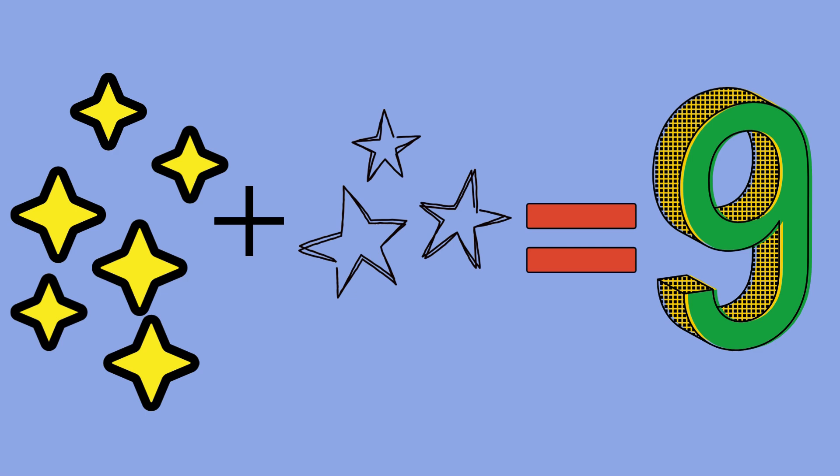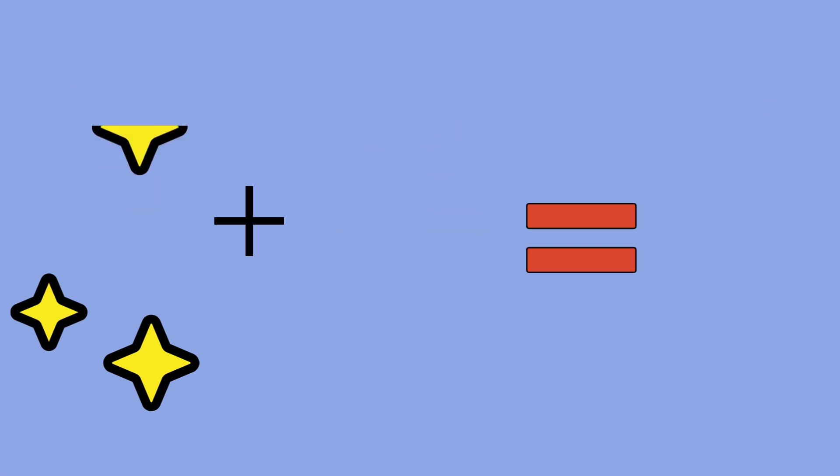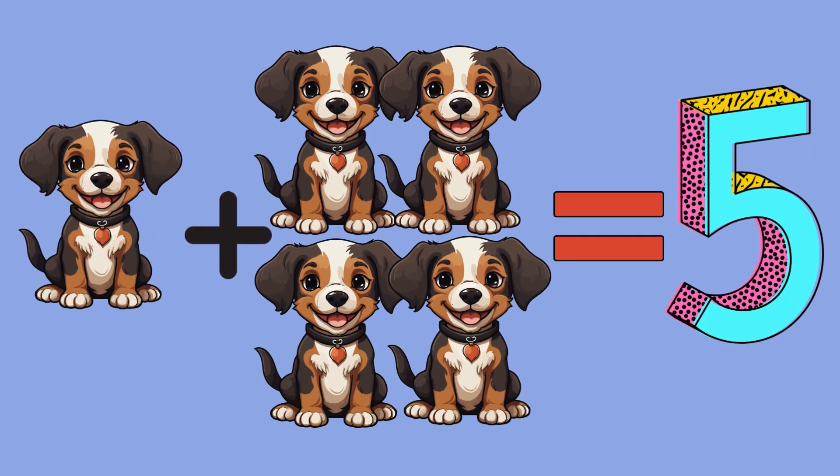Problem two. There are six stars in the sky. Other three stars appear. How many stars do we have all together? Let's count them. One, two, three, four, five, six, seven, eight, nine. Excellent, six plus three equals nine.